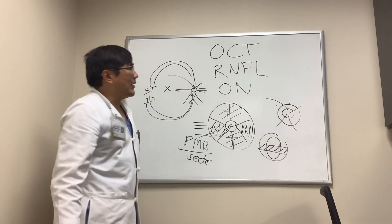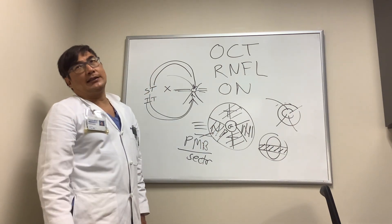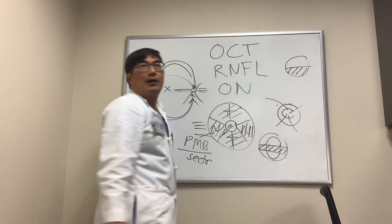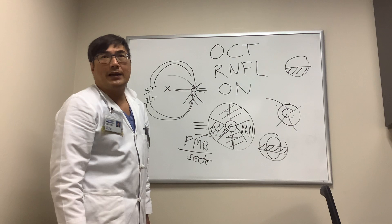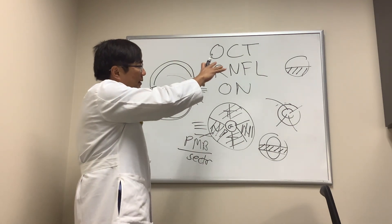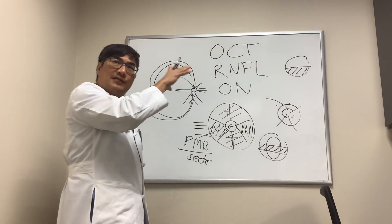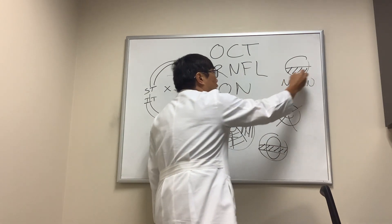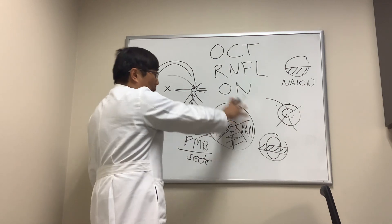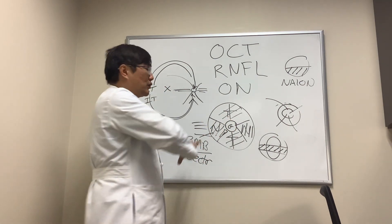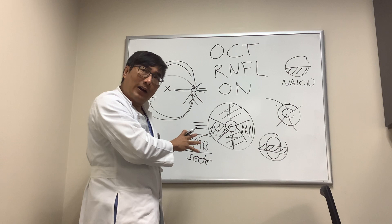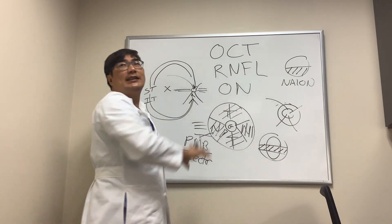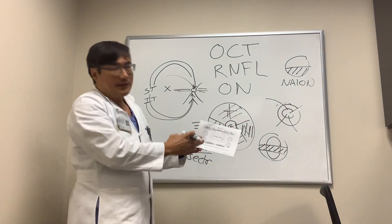Another cause of sector atrophy is non-arteritic anterior ischemic optic neuropathy (NAION): patients may have an altitudinal field defect, but only the bottom part of the optic nerve will be pale. So sector atrophy plus an altitudinal field defect is a very common presentation after NAION. You should look at both the global number and the sectors showing nerve fiber layer loss, as the type of sector involvement can suggest the etiology of the optic neuropathy on OCT.